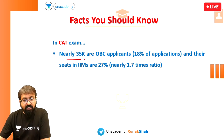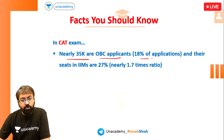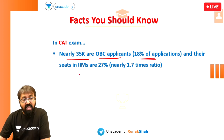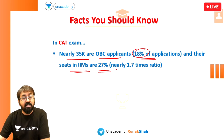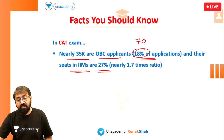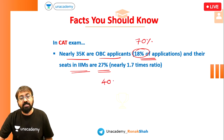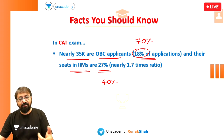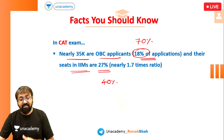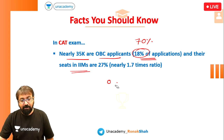Nearly 35,000 applicants are from the OBC category — about 18% of total applicants — and the seats in IIMs are 27% for this category. So for 18% applicants there are 27% seats, compared to open category where 70% applicants get 40% seats. The ratio of seats percentage to applicant percentage here is about 1.7 times.